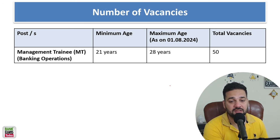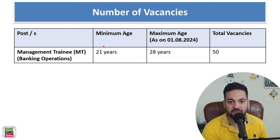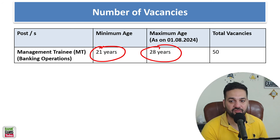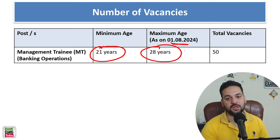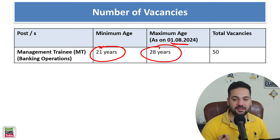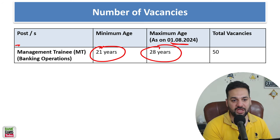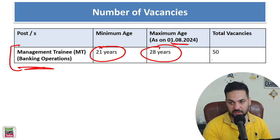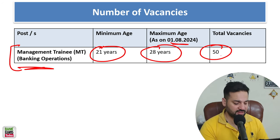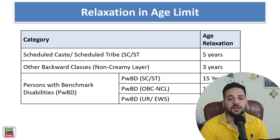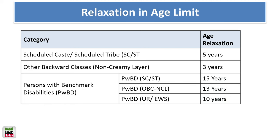The age eligibility criteria: your age should be between 21 to 28 years as on 1st of August 2024 for the Management Trainee post. For Business Banking Operations, there are 50 vacancies in total. Age relaxation is available for SC/ST, OBC, and PwBD category candidates.